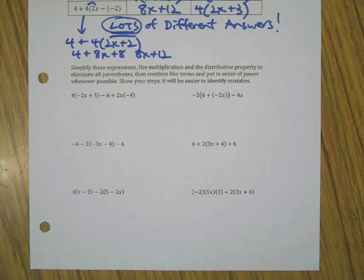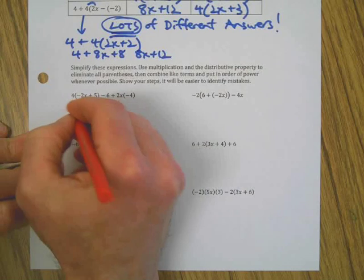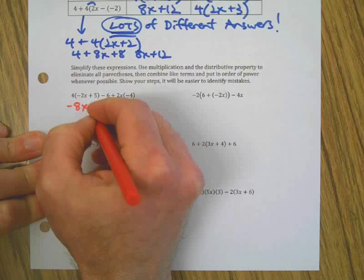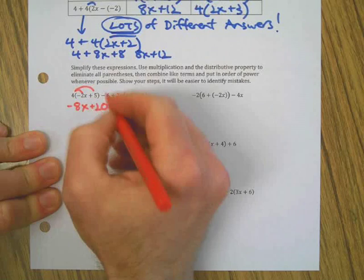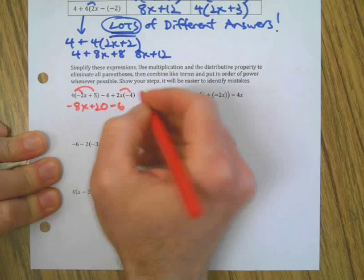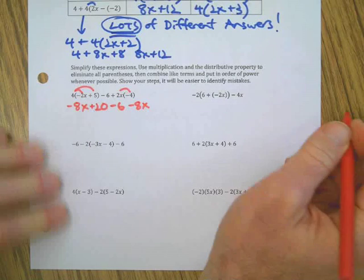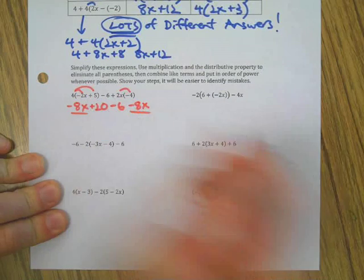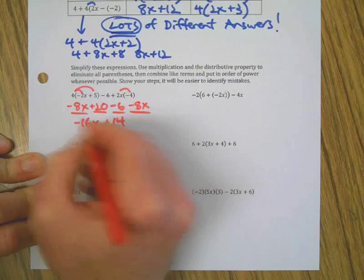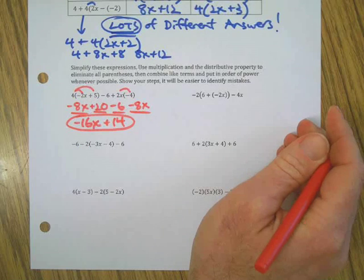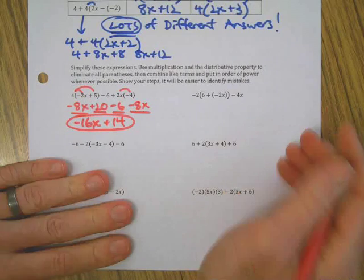Welcome back, here we go. First I'm going to just simplify everything possible to get rid of parentheses. Remember, distribution gets rid of them through multiplication. Negative 6 is just going to come down, and 2x times negative 4 is negative 8x. Now I'm going to combine like terms. There's my x's, and positive 20 and negative 6 makes positive 14. Did you get that? Nice job.